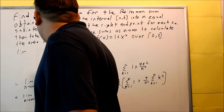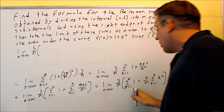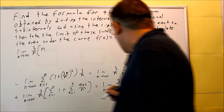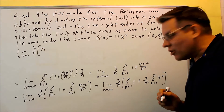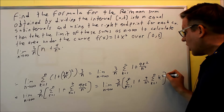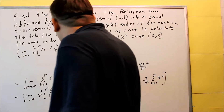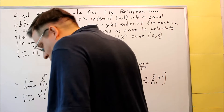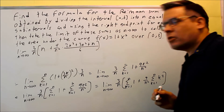Now we put in the summation formulas. So we have limit as n goes to infinity, with 3/n. For the first summation, summing 1 from k=1 to n gives n, since the formula says the sum of a constant c is c times n. Then for the second part, we have 9/n² times the sum of k² from k=1 to n, and we use the expanded form of the formula: (2n³ + 3n² + n) over 6.